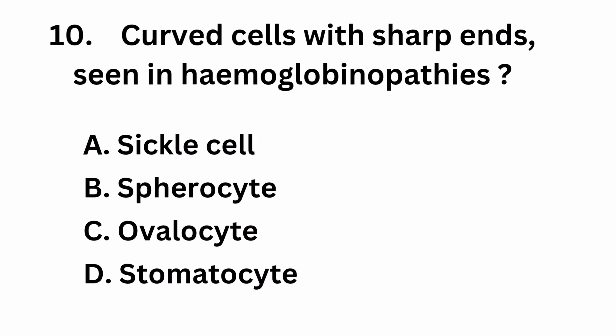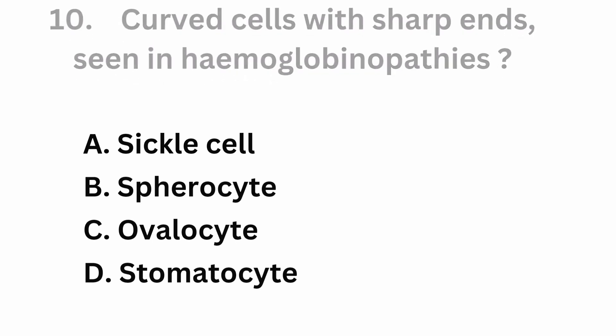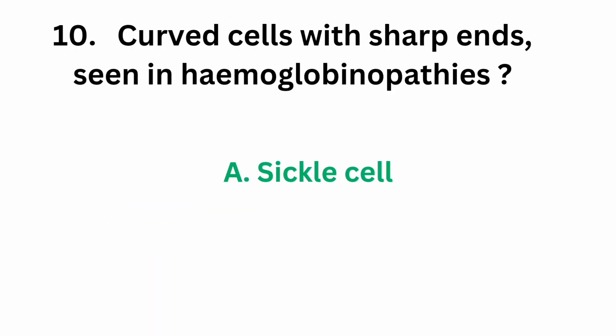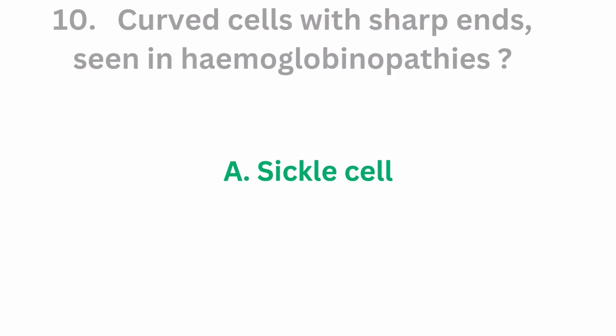Question number 10: curved cells with sharp ends, seen in hemoglobinopathy. Option A, sickle cell. Option B, spherocyte. Option C, ovalocyte. Option D, stomatocyte. The correct answer is option A, sickle cell. Sickle cells are sickle-like cells, that is curved cells.